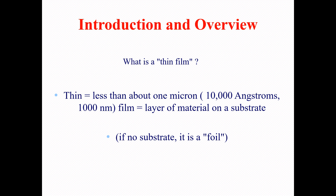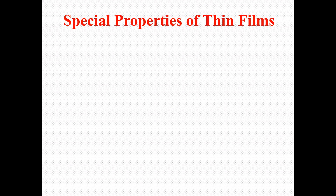If someone does not utilize a substrate, then you cannot call it a thin film — it might be a foil. That's why we say that for thin film deposition, a substrate is an essential component. To repeat the formal definition: a thin film is a layer of material on a substrate with a thickness equal to or less than one micron, 10,000 angstroms, or 1,000 nanometers. Without a substrate, it is not a thin film.